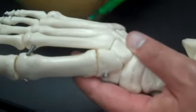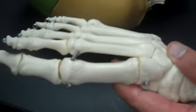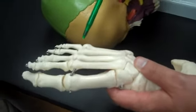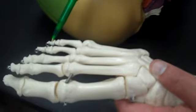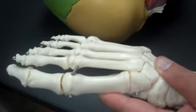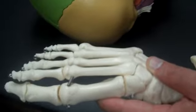We have the metatarsals. And then we have phalanges. Same counting system as the fingers. One, two, three, four, five. Proximal, medial, distal. Proximal, medial, distal. Proximal, distal. And that should be the end of our skeleton.